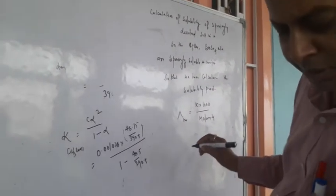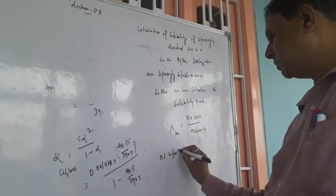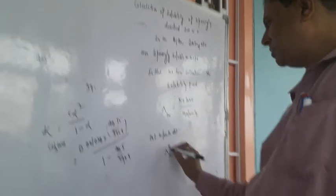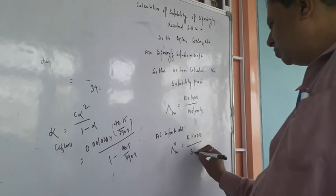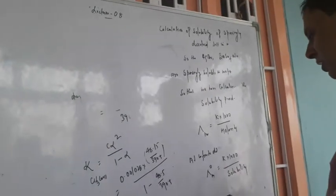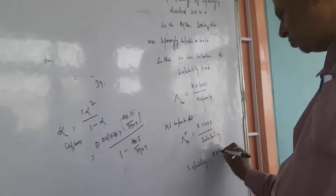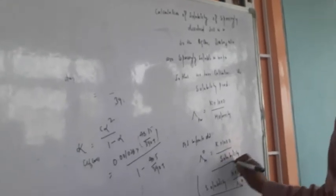At infinite dilution, lambda M standard equals kappa times 1000 upon solubility. Where lambda M standard is the molar conductivity at infinite dilution. Therefore, solubility equals kappa times 1000 divided by lambda M standard. We can calculate the solubility by this formula. Thank you.